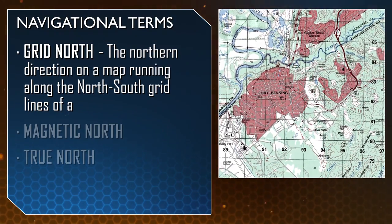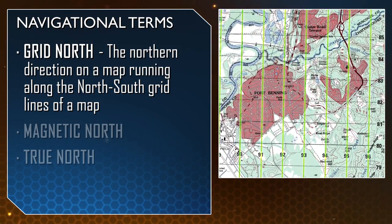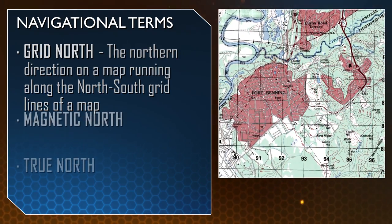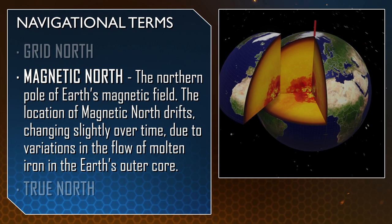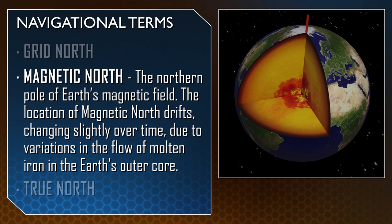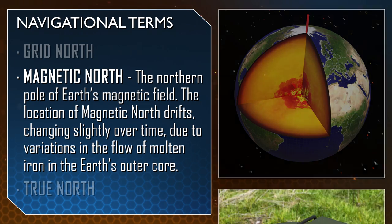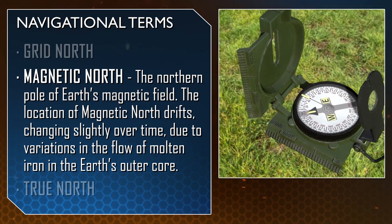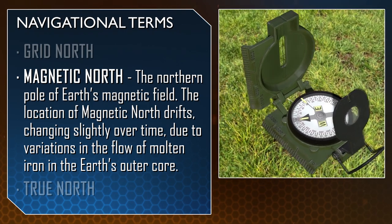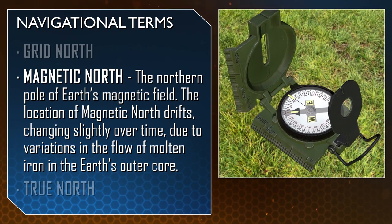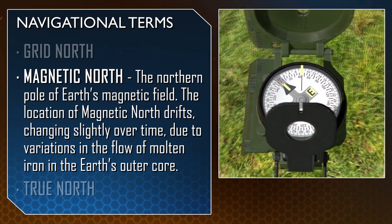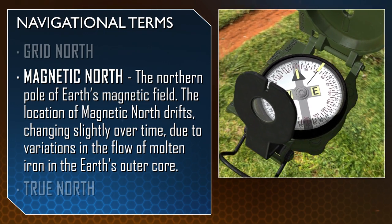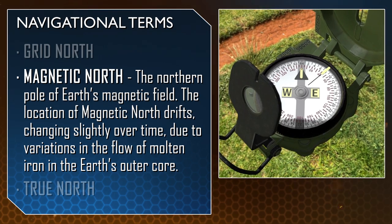Grid north refers to the northern direction on a map running along the north-south gridlines of a map. Magnetic north is the northern pole of the Earth's magnetic field. The location of magnetic north drifts, changing slightly over time due to variations in the flow of molten iron in the Earth's outer core. It is found using a compass — the magnetized pointer, or compass needle, points toward magnetic north. When using the compass, keep metal objects like ID tags away from the magnetized compass needle so the needle's attraction to metal does not present an inaccurate reading.